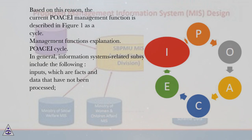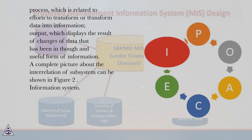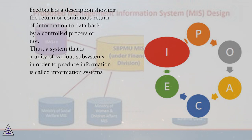In general, information systems and related subsystems include the following. Inputs, which are facts and data that have not been processed. Process, which is related to efforts to transform data into information. Output, which displays the result of changes of data that has been processed into a useful form of information. A complete picture about the interrelation of subsystems can be shown in figure 2. Feedback is a description showing the return or continuous return of information to data, by a controlled process or not.